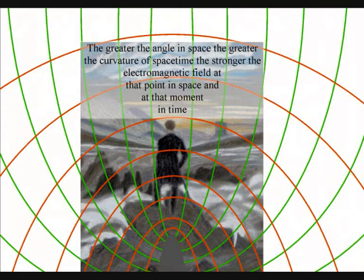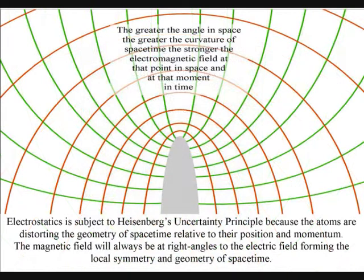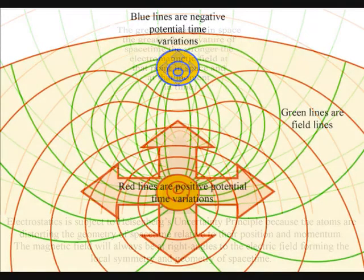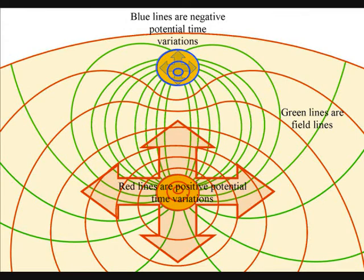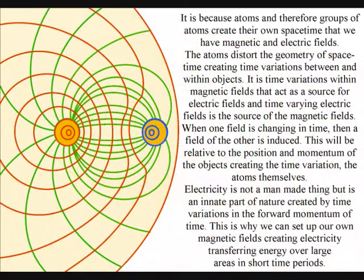An electric charge is an innate property of matter and will generate an electric field that will extend into three-dimensional space. It is time variations within electric fields that act as a source for magnetic fields, and time varying magnetic fields is a source of electric fields. When one field is changing in time, then a field of the other is induced.